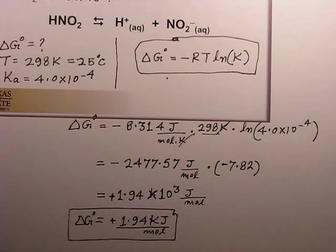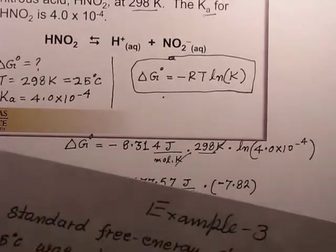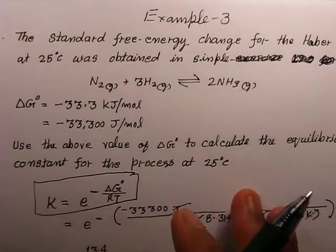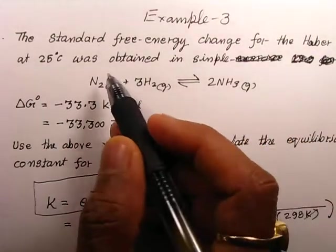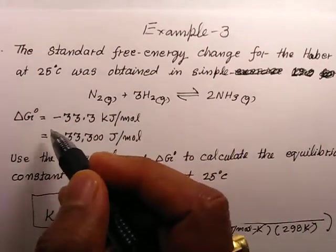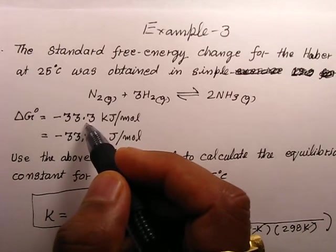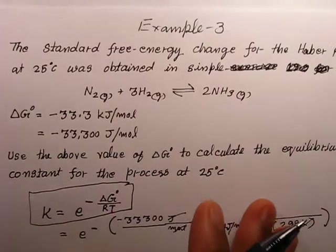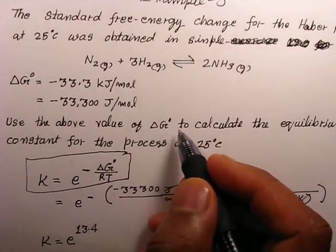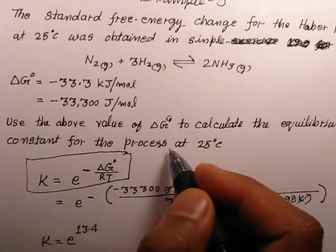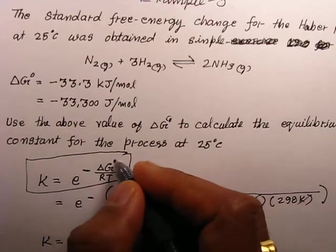That is another application of this equation — calculating delta G° using K. The third example involves the Haber process: the standard free energy change is given as 33.3 kJ/mol, or 33,300 joules per mole. We are asked to use this delta G° value to calculate the equilibrium constant K.